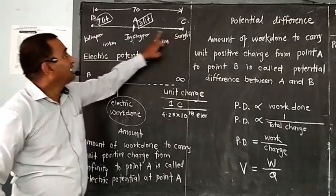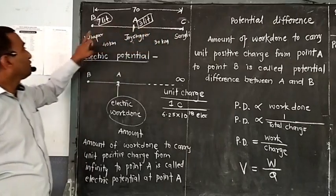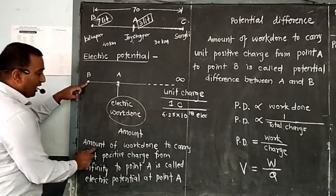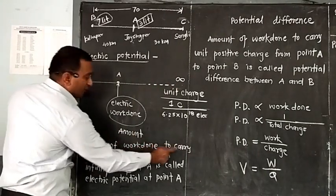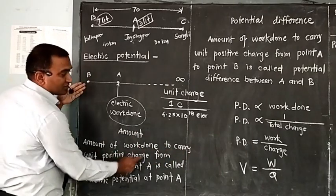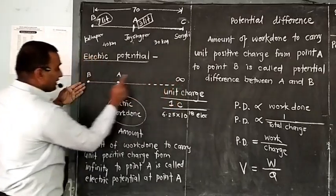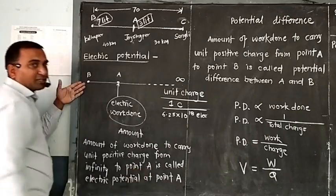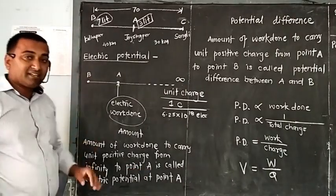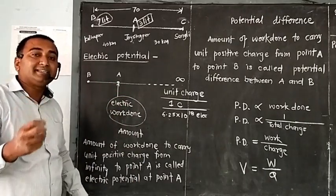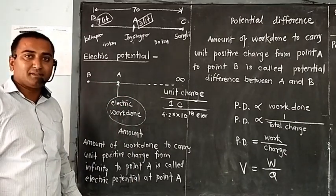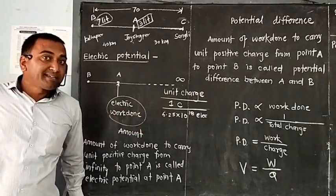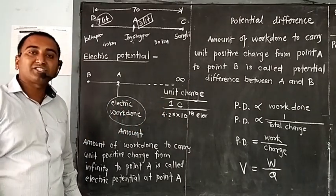Just as 7 litres is the petrol potential of Kolhapur, similarly, the amount of work done to carry unit positive charge from infinity to point B is called electric potential at point B. Suppose many points are there within the wire — one point is D. The amount of work done to carry unit positive charge from infinity to point D is called electric potential at point D.